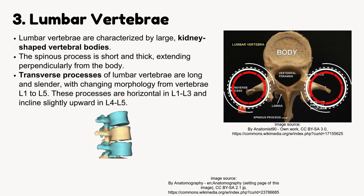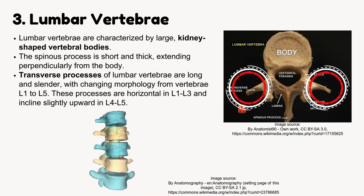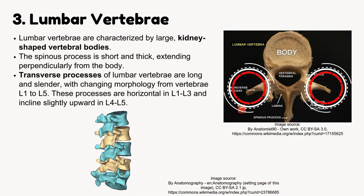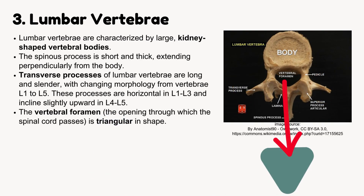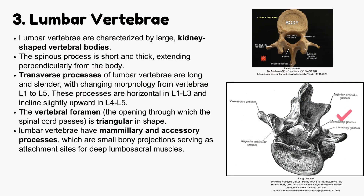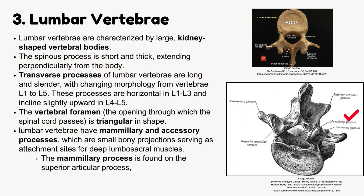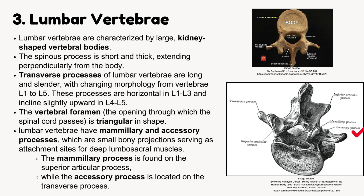The transverse processes are horizontal in L1 to L3 and inclined slightly upward in L4 and L5. The vertebral foramen is triangular in shape. They also have mammillary and accessory processes, which are small bony projections that serve as attachment sites for deep lumbar sacral muscles. The mammillary process is on the superior articular process, and the accessory process is on the transverse process.